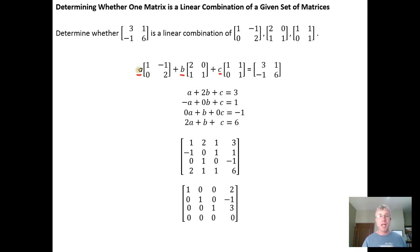Such that A times this matrix plus B times this matrix plus C times this matrix will generate or yield this matrix here. And if we can find values of A, B, and C that work,